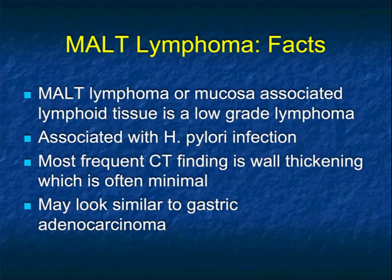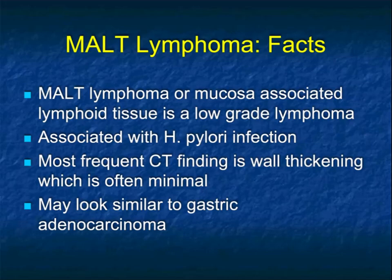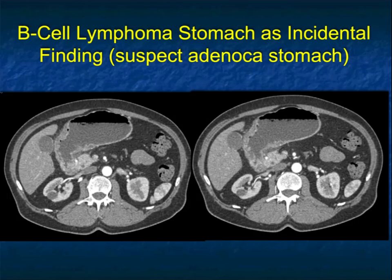MALT lymphoma — mucosa-associated lymphoid tissue — is a low-grade lymphoma commonly associated with H. pylori infection, very much like adenocarcinoma. The most frequent CT finding is wall thickening, but not bulky wall thickening. These are the ones that are particularly common to look very much like gastric adenocarcinoma.